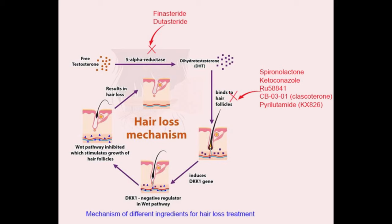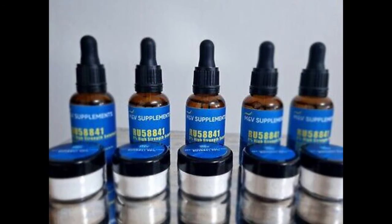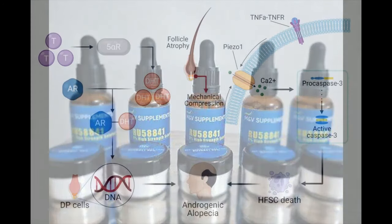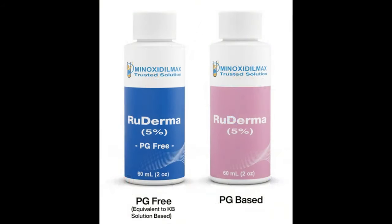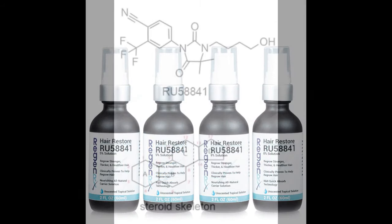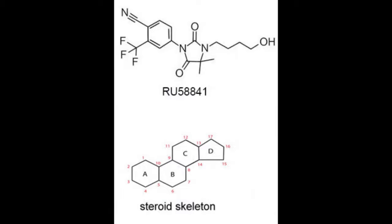Bringing this back to the context of topical antiandrogen treatment — if a topical antiandrogen like RU58841 is applied to the scalp and hypothetically had a half-life of 14 hours, that would mean, once attached to the receptor, RU58841 would be actively blocking the androgen receptor and preventing DHT from damaging the hair follicle for up to 14 hours. I'm not claiming RU58841 actually has a 14-hour half-life; I'm just using it as an example to illustrate the concept of half-life.